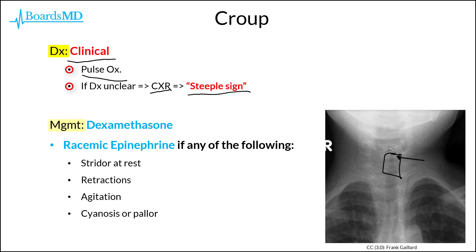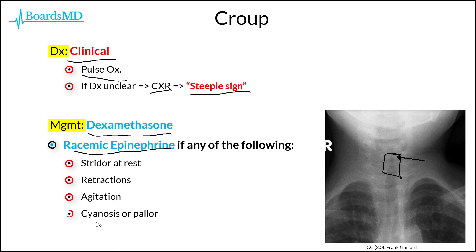In terms of management, we treat croup with the use of dexamethasone, which is a steroid. Additionally, we should also give racemic epinephrine if we see any of the following signs and symptoms: stridor at rest, retractions, agitation, or cyanosis or pallor.